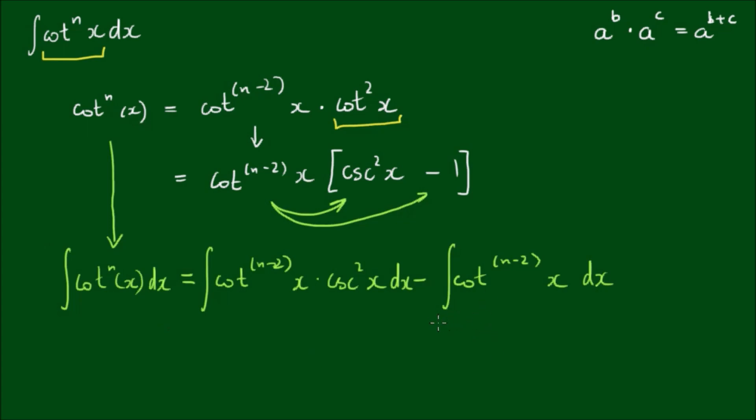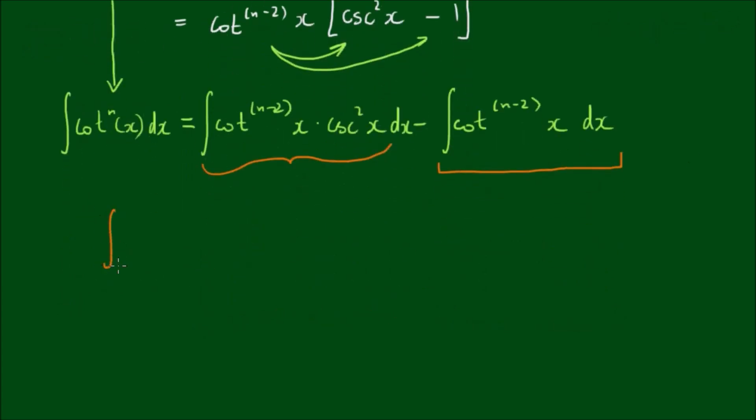I'm going to leave this trailing term here because it already has its power reduced. And let's put our attention to the front integral, the integral of cot to the n minus 2 power of x by cosecant squared x with respect to x. Now before we plunge in and use integration by parts, let's realize that this cosecant squared x term here is related to the derivative of cot x.